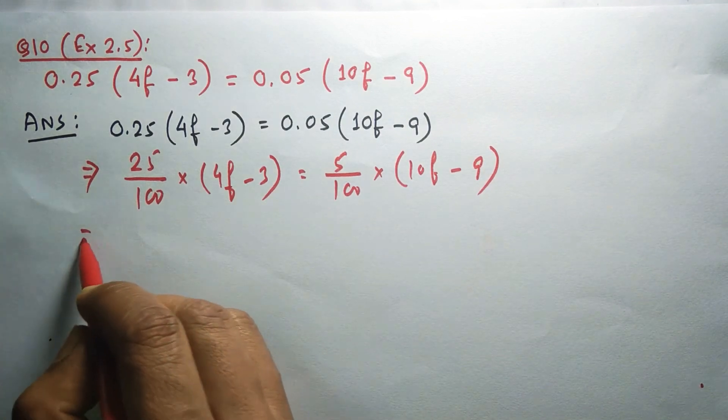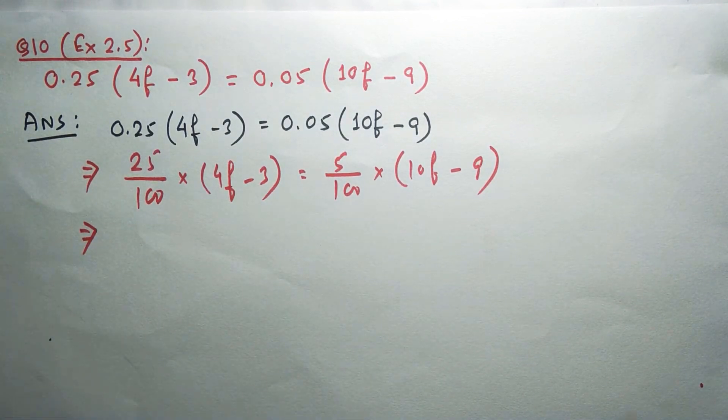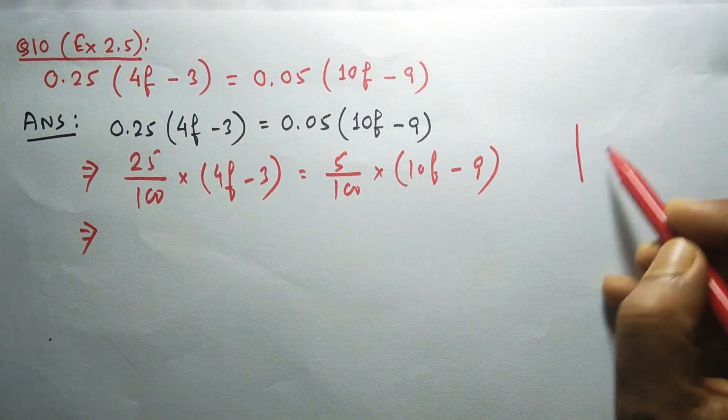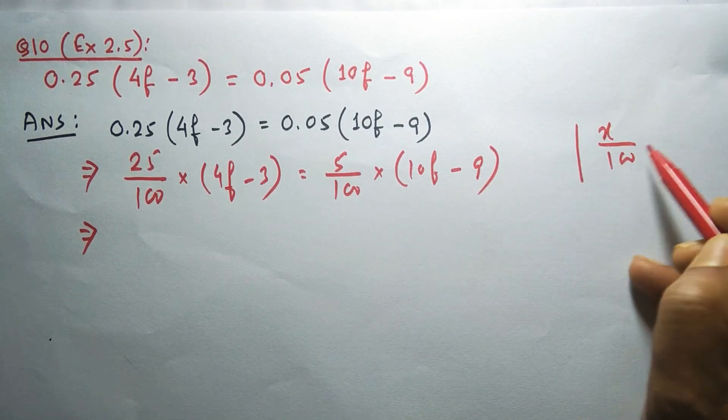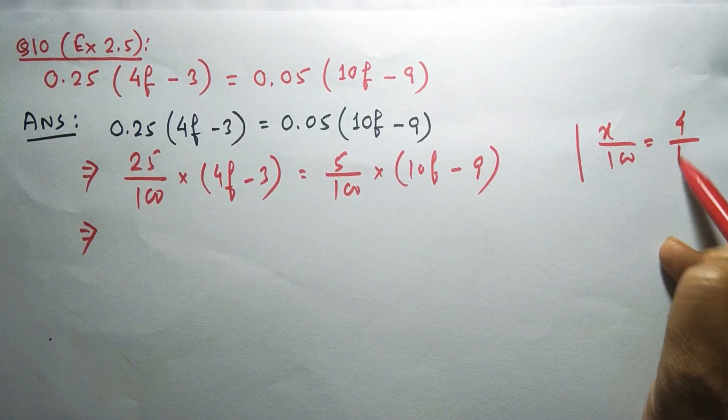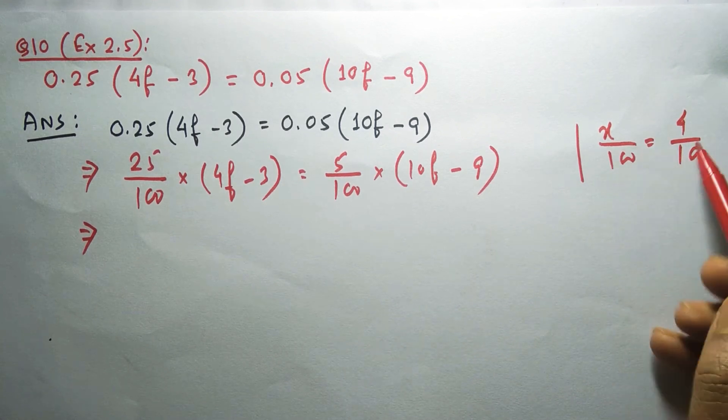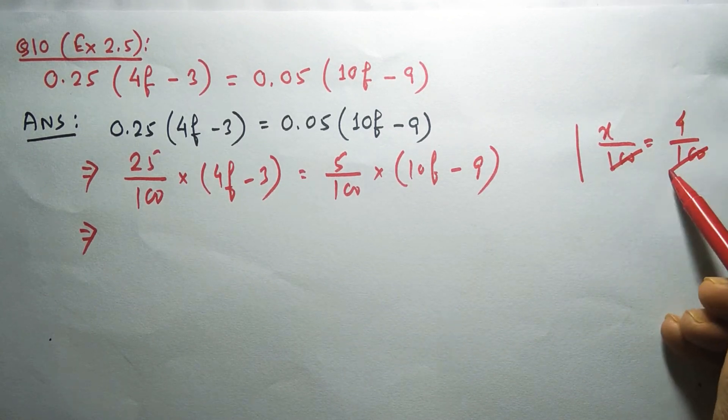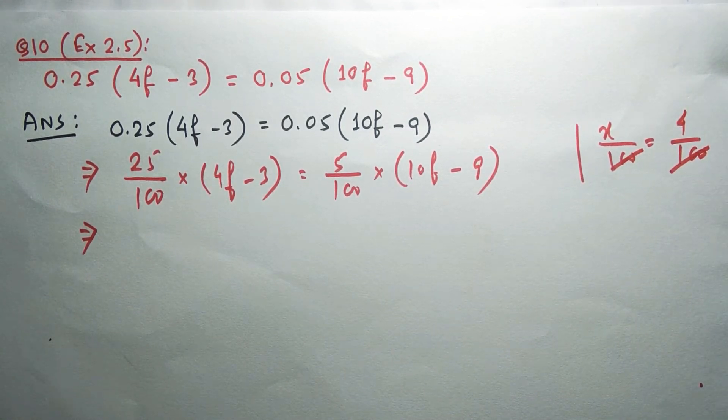Now suppose something like x by 100 equals 4 by 100. To get the value of x, we can cancel 100 from both sides.